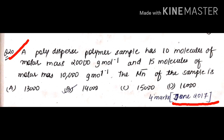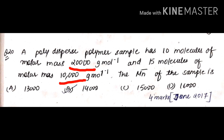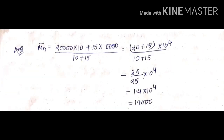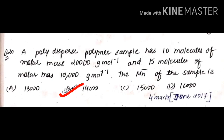From June 2017 for four marks: a polydisperse polymer sample has 10 molecules of molar mass 20,000 g/mol and 15 molecules of molar mass 10,000 g/mol. Find M̄N. Using M̄N = (N1M1 + N2M2) / (N1 + N2), with N1 = 10, M1 = 20,000, N2 = 15, M2 = 10,000. After multiplying and dividing, the answer is 14,000. So correct answer is B.